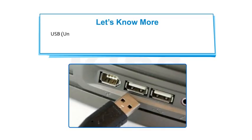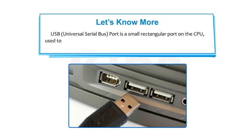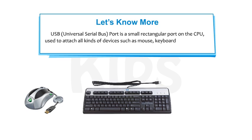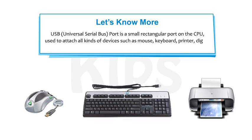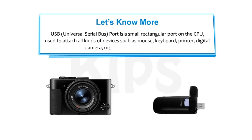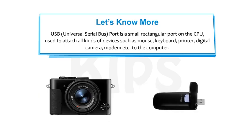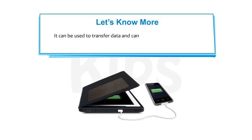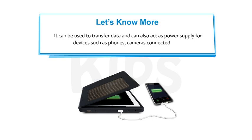USB — Universal Serial Bus — port is a small rectangular port on the CPU, used to attach all kinds of devices such as mouse, keyboard, printer, digital camera, modem, etc. to the computer. It can be used to transfer data and can also act as a power supply for devices such as phones and cameras connected to it.